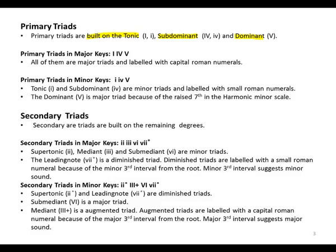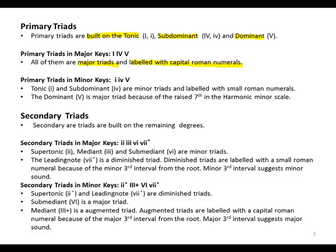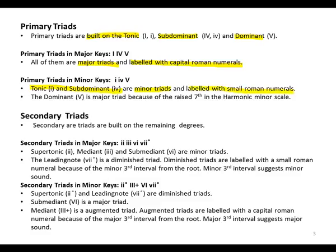Primary triads in major keys are all major triads, and they are labeled with a capital Roman numeral. So one will be major, four will be major, and five will be major.